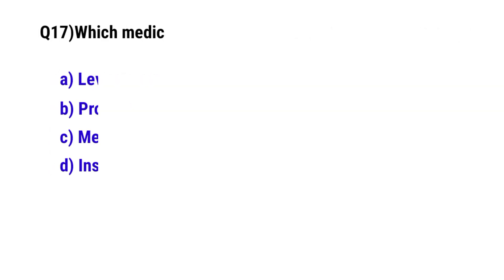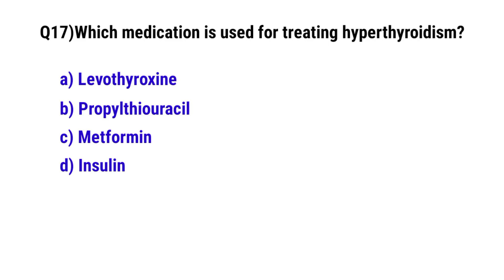Question number 17: Which medication is used for treating hyperthyroidism? The correct option is B: propylthiouracil.